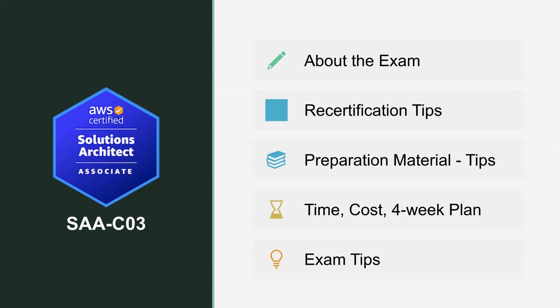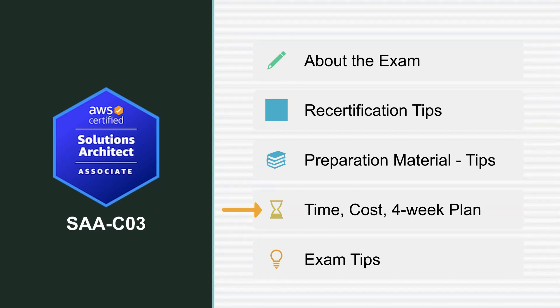Let's talk about how I passed the latest SAA certification, which is C03 for Solution Architect Associate from AWS. I'm going to talk about the exam, recertification tips, preparation material, tips about how to get discounts, the time and cost, my four-week plan, and finally some exam tips.